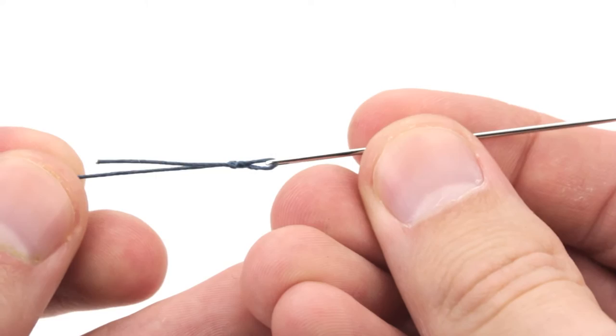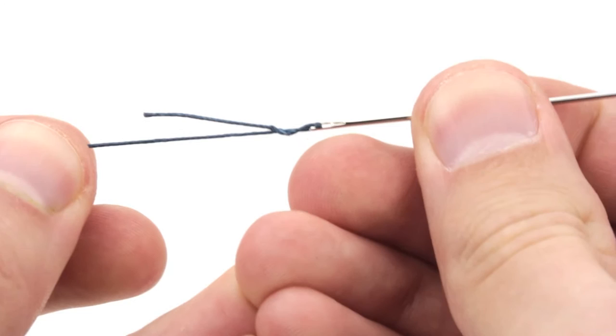So you can see that I've run my thread through this needle, and there's a little knot here holding it on. If I have any tension on the line, that's going to keep my thread from slipping out of my needle.